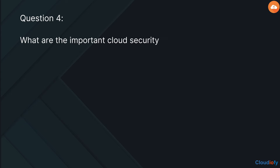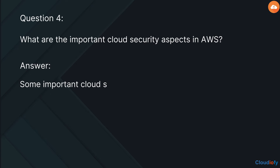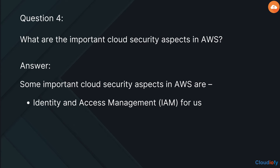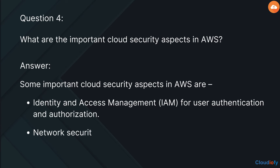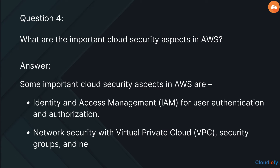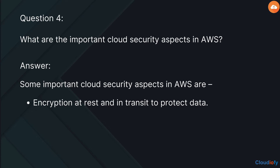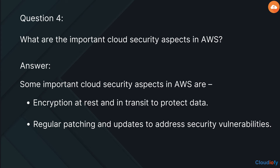The next question is: what are the important cloud security aspects in AWS? Some important cloud security aspects in AWS are: Identity and Access Management (IAM) for user authentication and authorization; network security with virtual private cloud (VPC), security groups, and network ACLs; encryption at rest and in transit to protect data; and regular patching and updates to address security vulnerabilities.